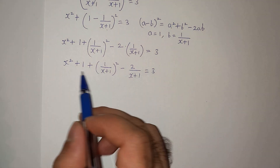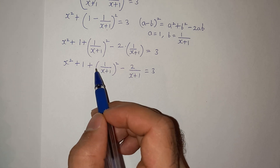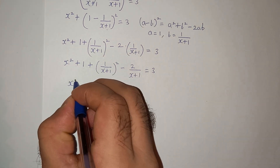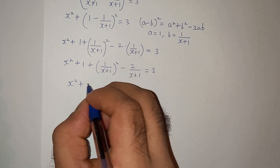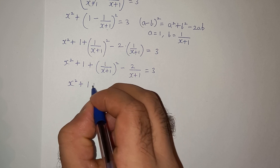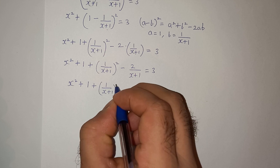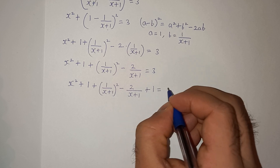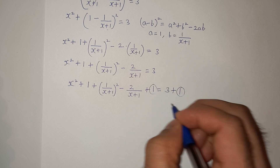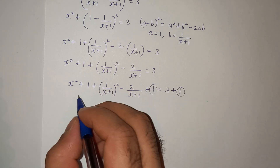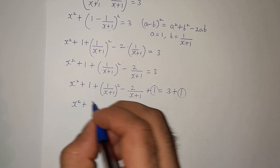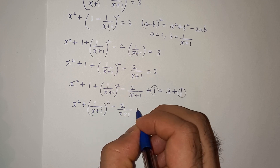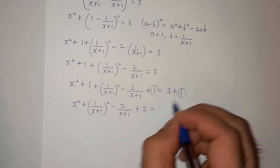The main trick here is to make this a perfect square. To do that, I'm going to add 1 on the left-hand side and 1 on the right-hand side. So we write: 1 + 1/(x+1)² - 2/(x+1) + 1 = 3 + 1. Simplifying, 1 + 1 = 2, and 3 + 1 = 4, giving us: 1 + 1/(x+1)² - 2/(x+1) + 1 = 4.